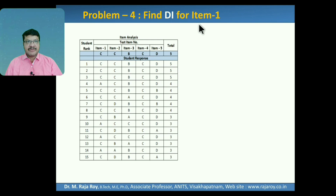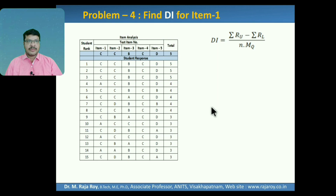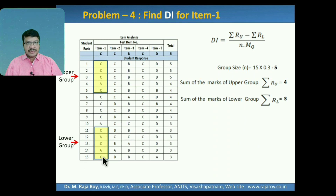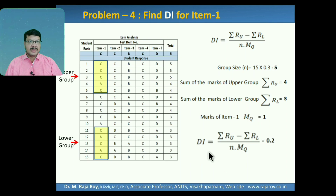Next problem: find DI for item 1. DI equals Sigma RU minus Sigma RL divided by N into MQ. Group size is 15 into 0.3, equals 5. Sigma RU equals 4, Sigma RL equals 3, and marks for each question is 1. DI equals 4 minus 3 divided by 5 into 1, which gives DI value of 0.2.